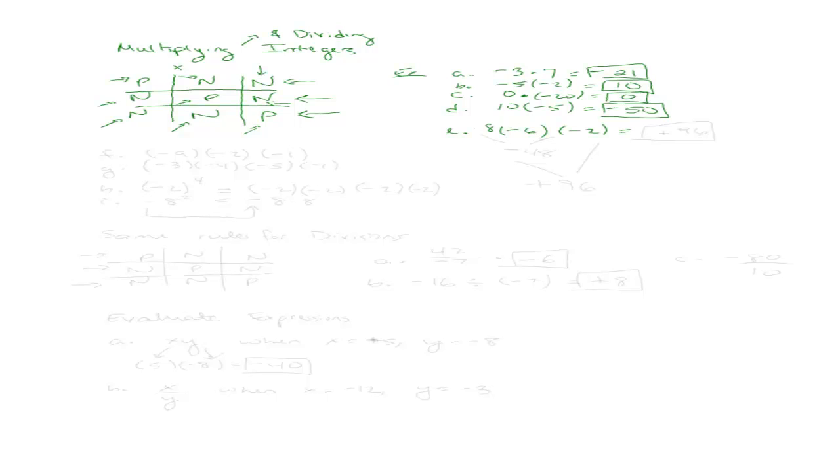Try 10 times negative 5. That's the very first row — a positive number times a negative number is a negative answer. Now let's try 8 times negative 6 times negative 2. Here we have more than two factors — three factors. When I multiply 8 times negative 6, my answer is going to be negative 48. And then when I multiply negative 48 times negative 2, my answer is going to be positive, which is positive 96.